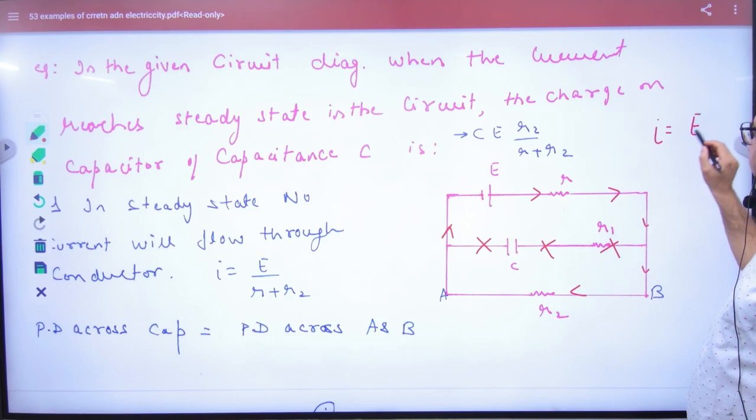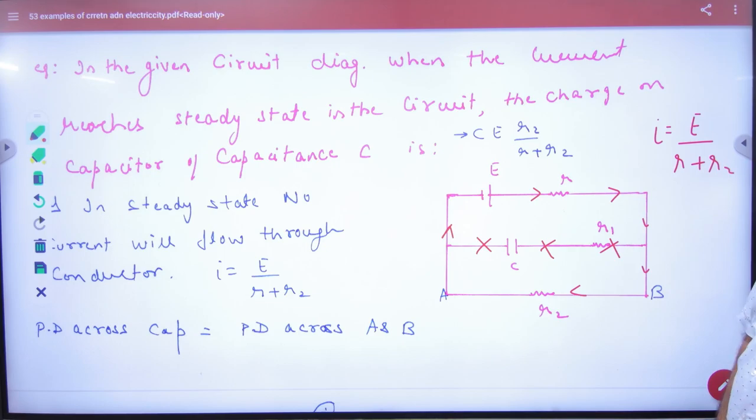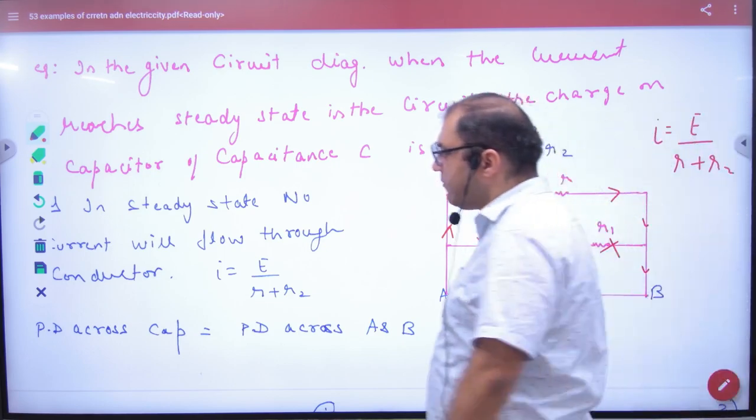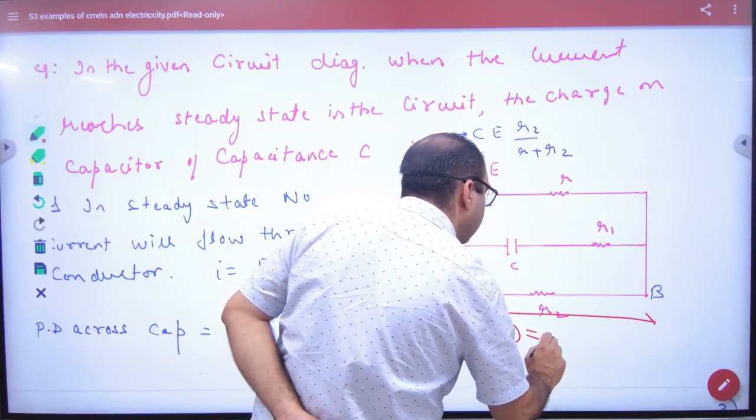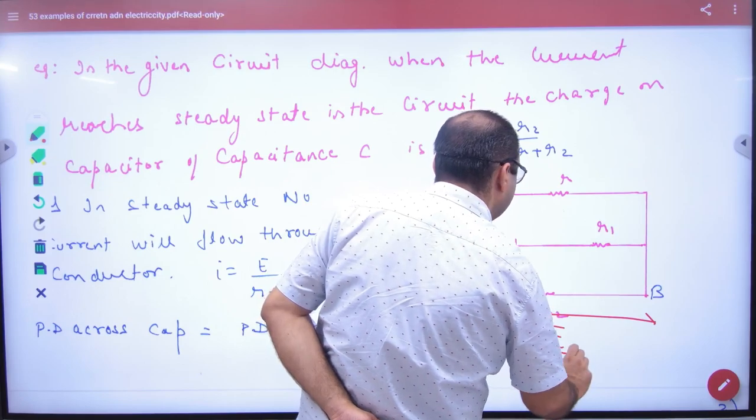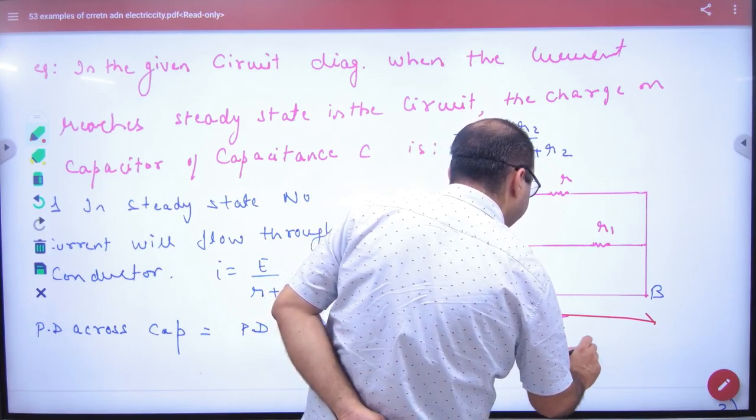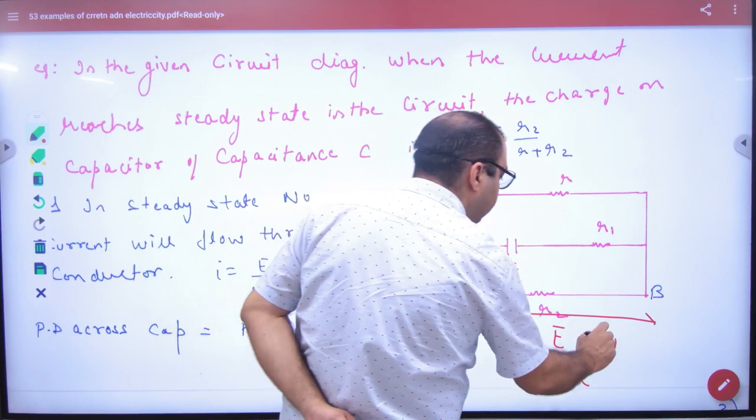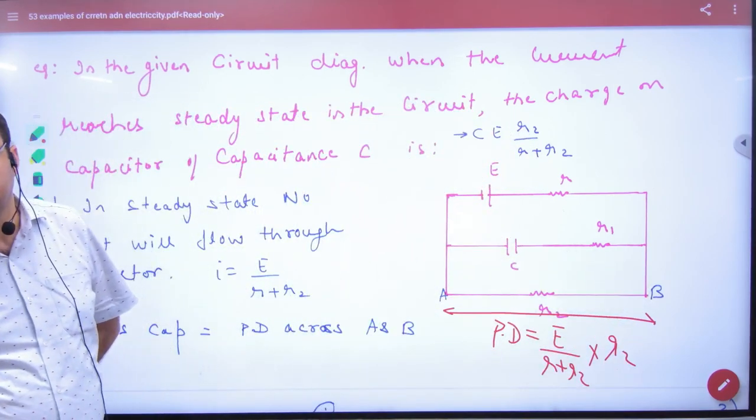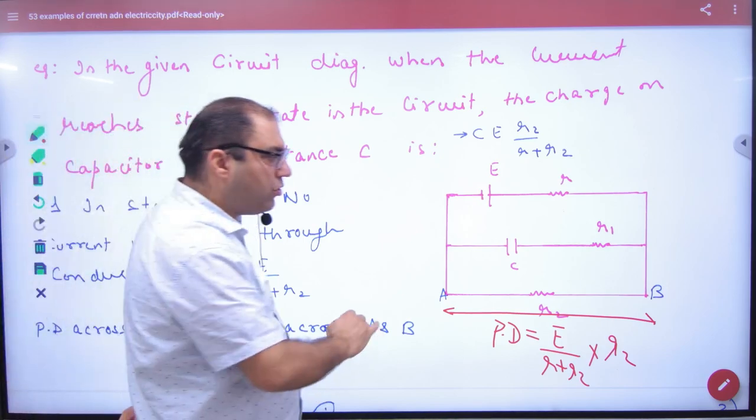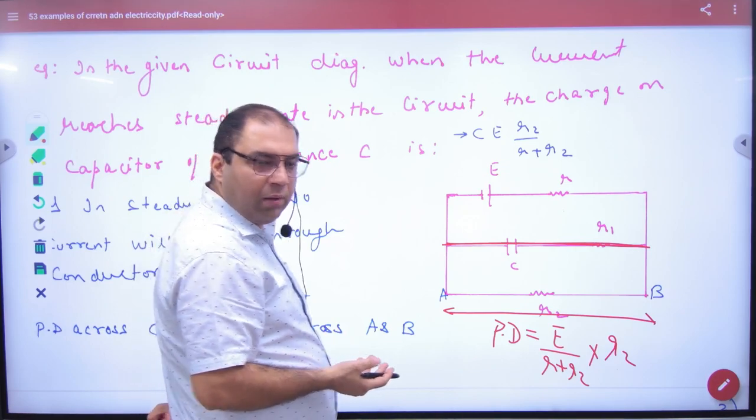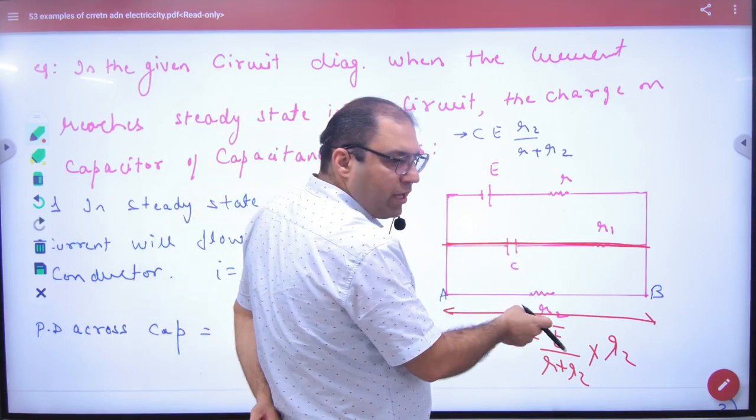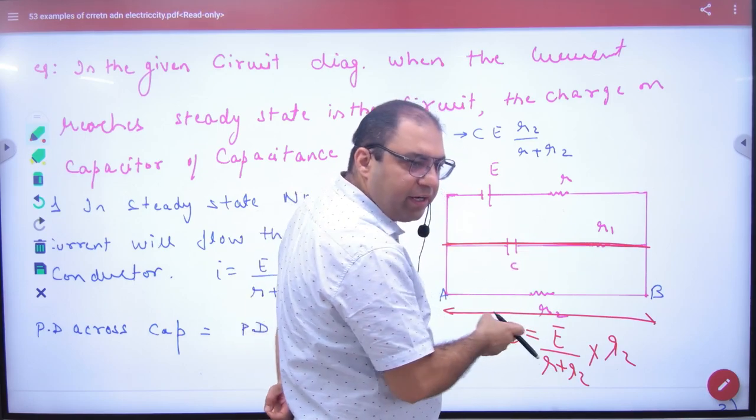I is equal to E divided by R plus R2. How much potential difference will develop? The potential difference is equal to E divided by R plus R2 into resistance R2. The potential difference is going to be developed. Where will it develop? Parallel.